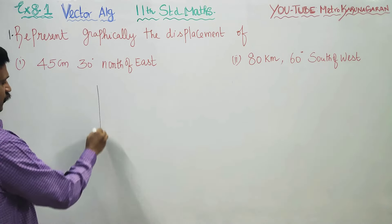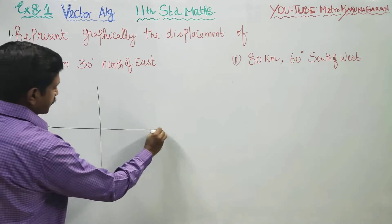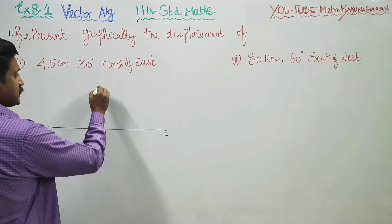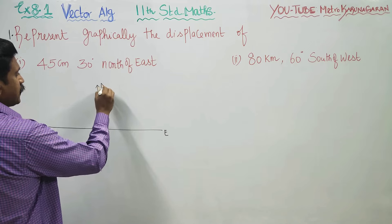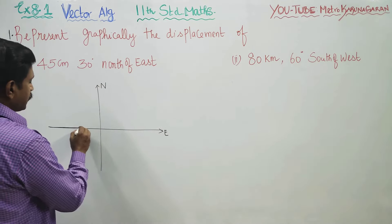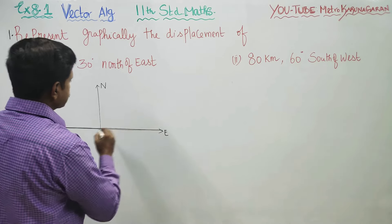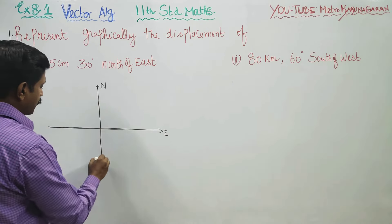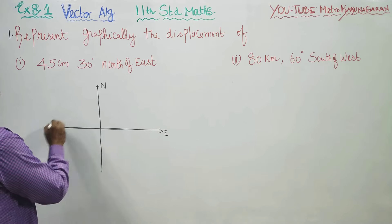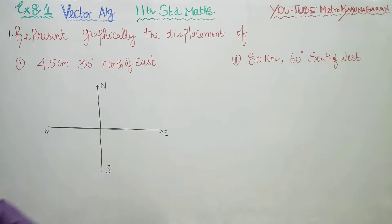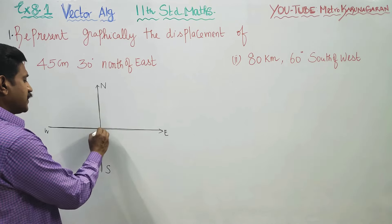The four directions we generally represent are east and north. This is my east and this is my north. East is the opposite side, north is the opposite side, south is along the x-axis, y-axis — these are my four directions. This is my origin.